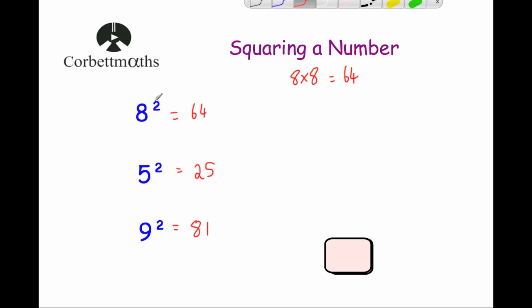If you see a little superscript 2 above a number, it means squared, and it just means you multiply that number by itself.